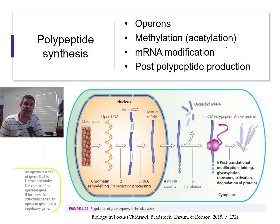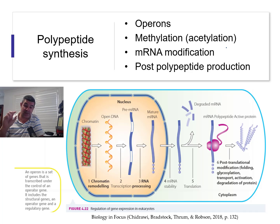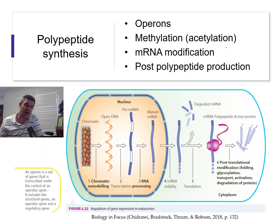It's worth exploring a few of these in more detail. There's a great diagram in the Nelson Biology Focus book that looks at areas where factors in the environment, or what we might call the internal environment of the cell — sometimes the internal environment of the nucleus — can actually have an impact on what happens in terms of the expression of the polypeptide once it reaches the ribosome.